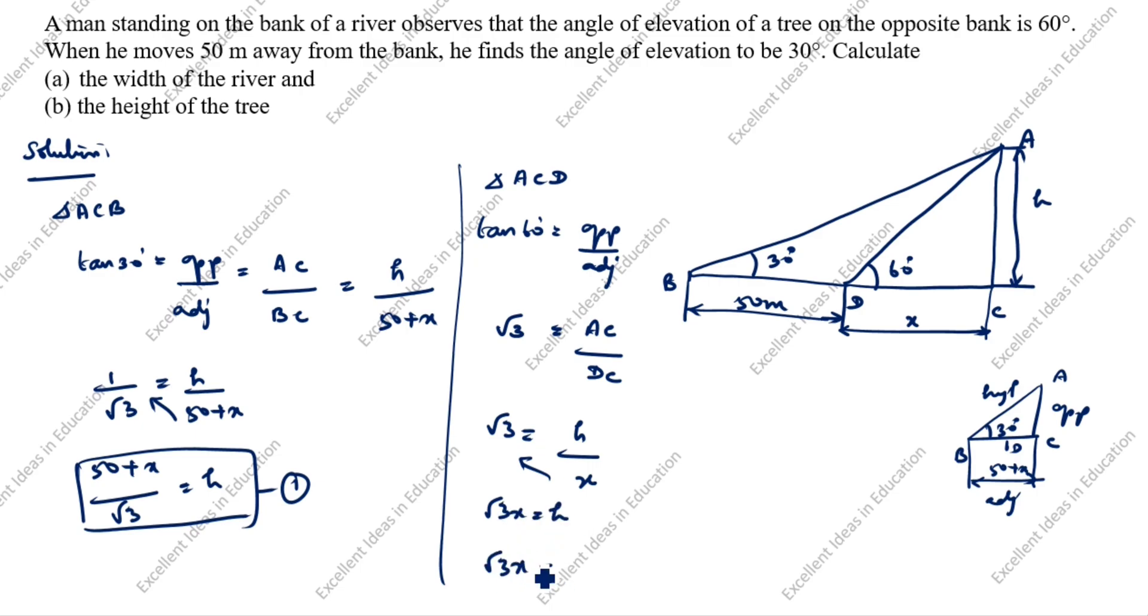Root 3 times x is equal to what is h value? Now only we calculated h, this is 50 plus x divided by root 3. Cross multiply, root 3 into root 3 into x is 3 into x equal to 50 plus x.